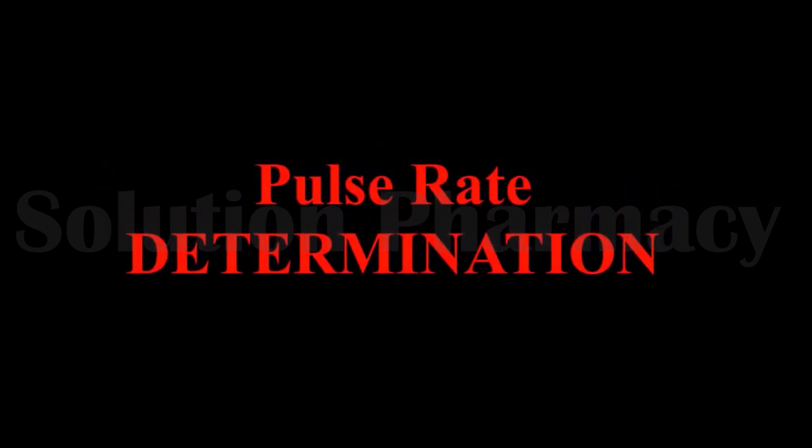Hello friends, welcome to the channel Solution Pharmacy. Today in this video we will show you how to check the pulse rate. For this, we have to place our index and middle finger over the radial artery, which is located right below the base of the thumb side of our wrist.